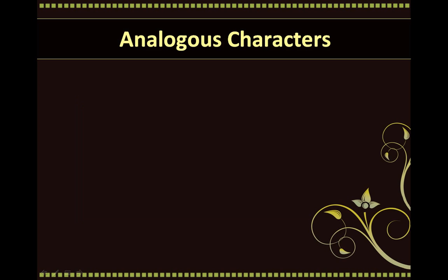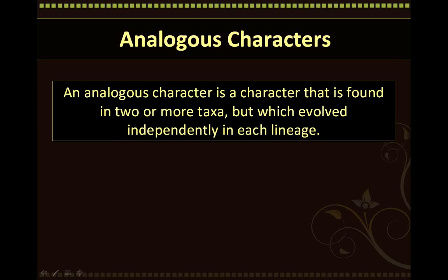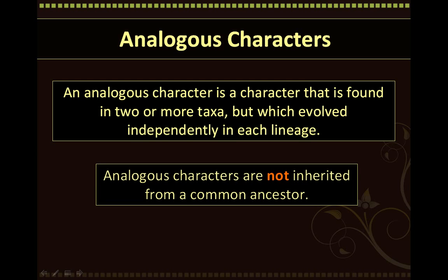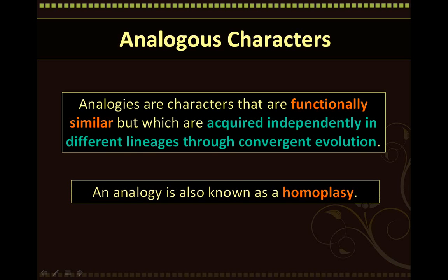Let's first discuss analogous characters. An analogy, or analogous character, is a character that is found in two or more taxa that evolved independently in each lineage. Analogous characters are not inherited from a common ancestor. In other words, analogies are characters that are functionally similar but which are acquired independently in different lineages through convergent evolution. An analogy is also known as a homoplasy.